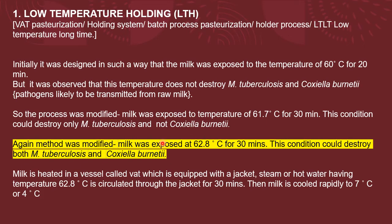At 61.7°C for 30 minutes, this condition could destroy only Mycobacterium tuberculosis but not Coxiella burnetii. So the method was modified again, where milk was exposed at 62.8°C for 30 minutes. This was the ideal condition as it could destroy both Mycobacterium tuberculosis and Coxiella burnetii, achieving the purpose of pasteurization.